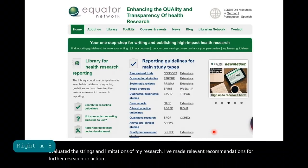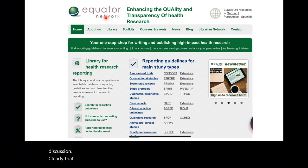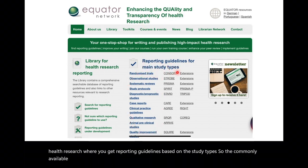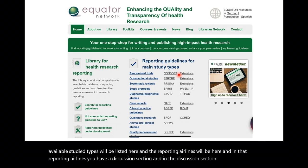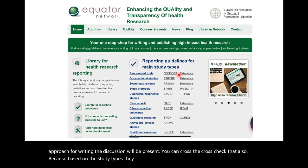That was about the checklist for discussion. Here is one more shortcut to approach the discussion clearly. We have the Equator Network, that is Enhancing the Quality and Transparency of Health Research, where you get reporting guidelines based on the study types. So the commonly available study types will be listed here and the reporting guidelines will be here. And in that reporting guidelines, you have a discussion section. And in that discussion section, a checklist-based approach for writing that discussion will be present. And you can cross-check that also, because based on the study types, they have additional points to cover in discussion, apart from what I have mentioned in this presentation.